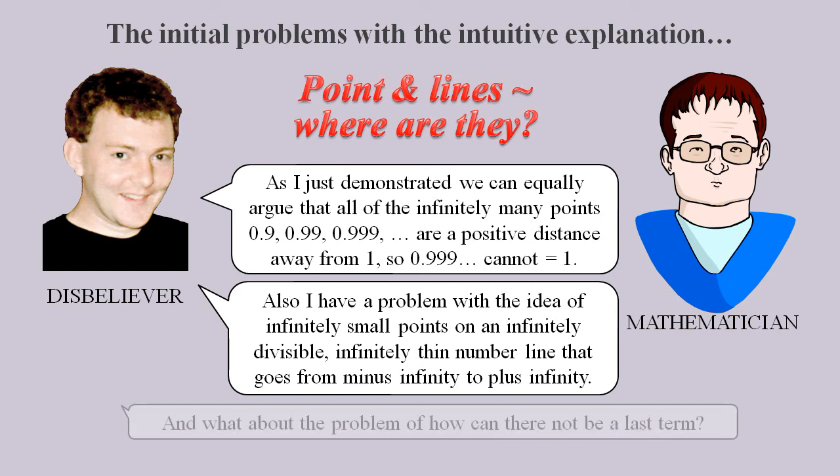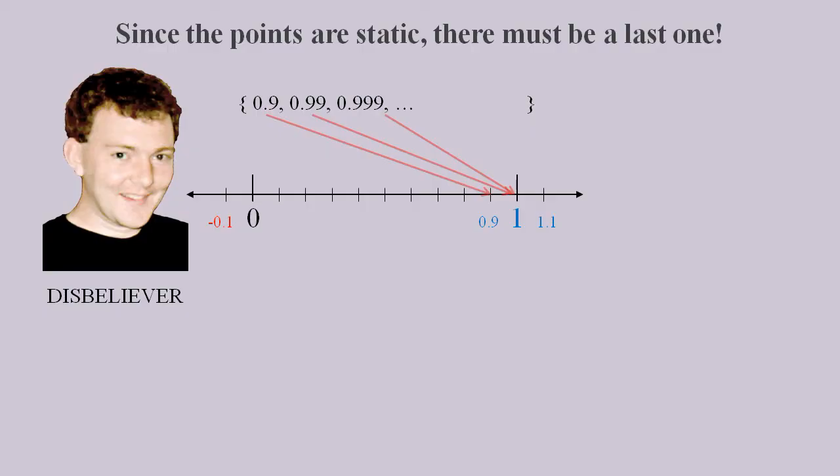And a third major problem is the problem of the last term. Given that all the points in the sequence 0.9, 0.99, and so on, are supposedly static points on the number line, then how can there not be a last point?